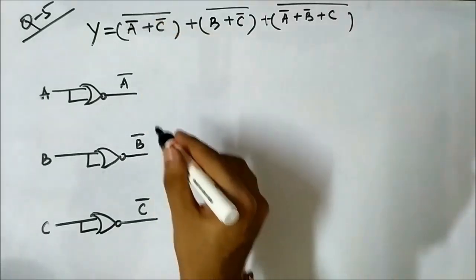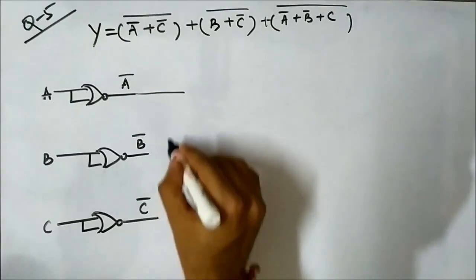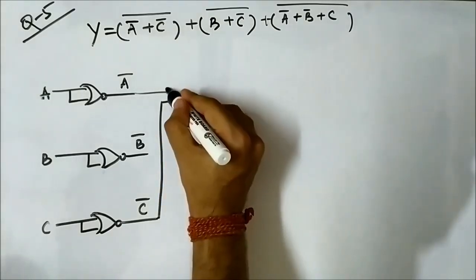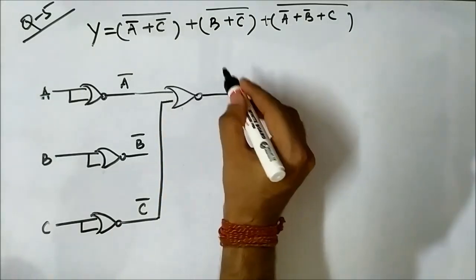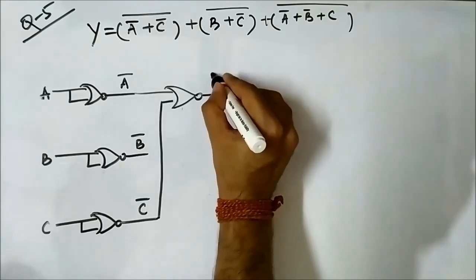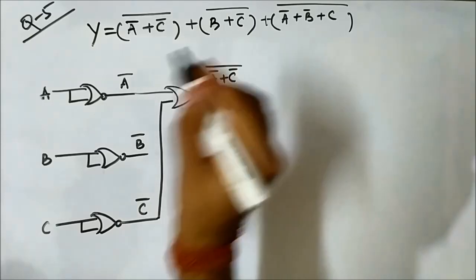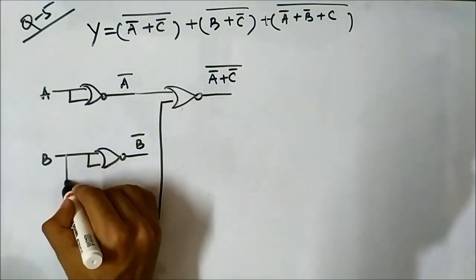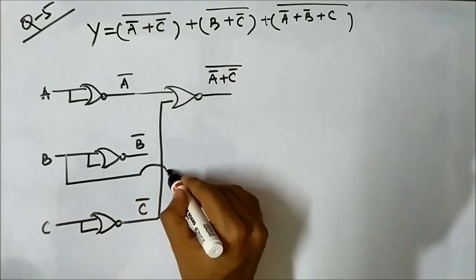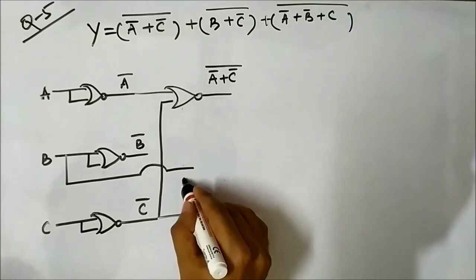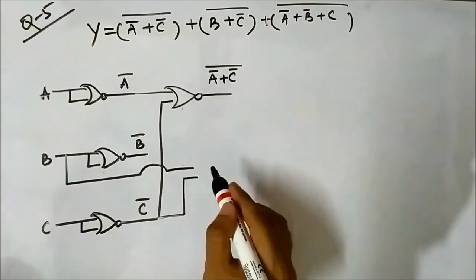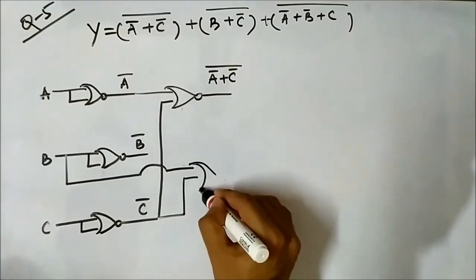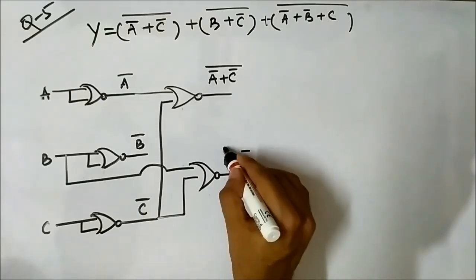Then we generate the individual terms. First, let us get the term (A' + C'). We pass A' and C' through a NOR gate to get (A' + C')'. Then for (B + C̄)', we take B and C̄ and pass them through a NOR gate to get (B + C̄)'.